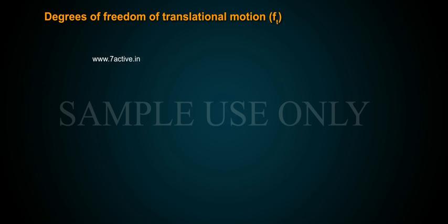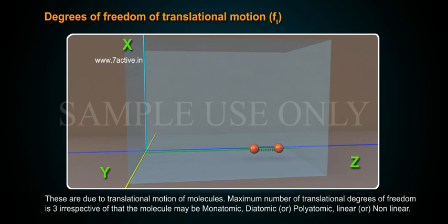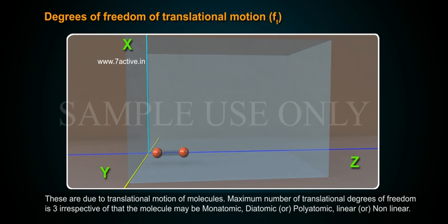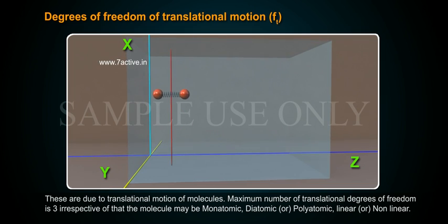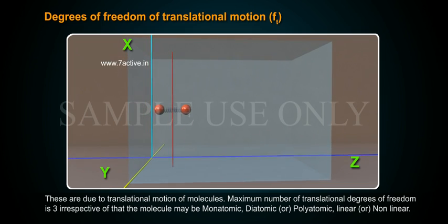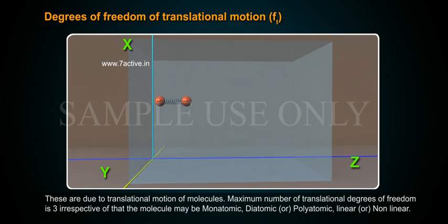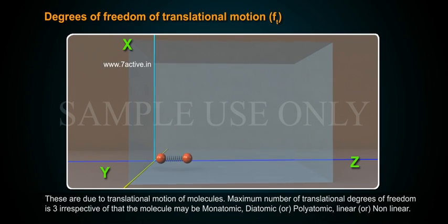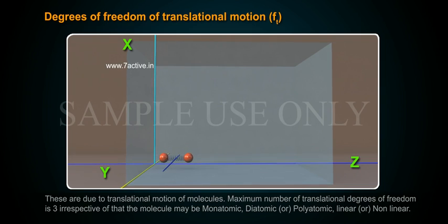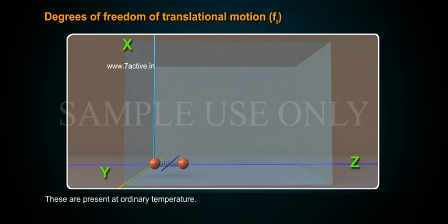Degrees of freedom of translational motion: These are due to translational motion of molecules. The maximum number of translational degrees of freedom is 3, irrespective of whether the molecule may be monatomic or polyatomic, linear or non-linear. These are present at ordinary temperature.